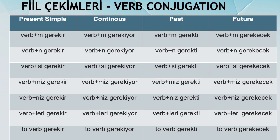In the chart, for present simple tense, you see verb+M, verb+N, verb+SI — this is the verbal noun part. At the end, you see 'to verb', which is the infinitive form — you can use it without a pronoun. And it is the same in every tense: present simple, continuous, past, and future. After that, you conjugate the gerekmek verb according to tense: for present simple it is gerekir, for continuous it is gerekiyor, for past it is gerekti, and for future it is gerekecek.